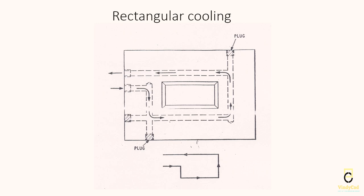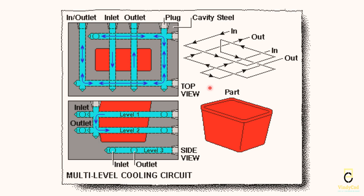Before understanding conformal cooling, we should understand conventional cooling and its limitations. Here are some examples. This is rectangle cooling — to manufacture this, we drill five holes and plug the openings of the drill to create a closed circuit. This is for a simple part. Here we can see the same rectangle cooling but at different levels — all three levels are connected with vertical cooling lines. This is also produced by drilling.